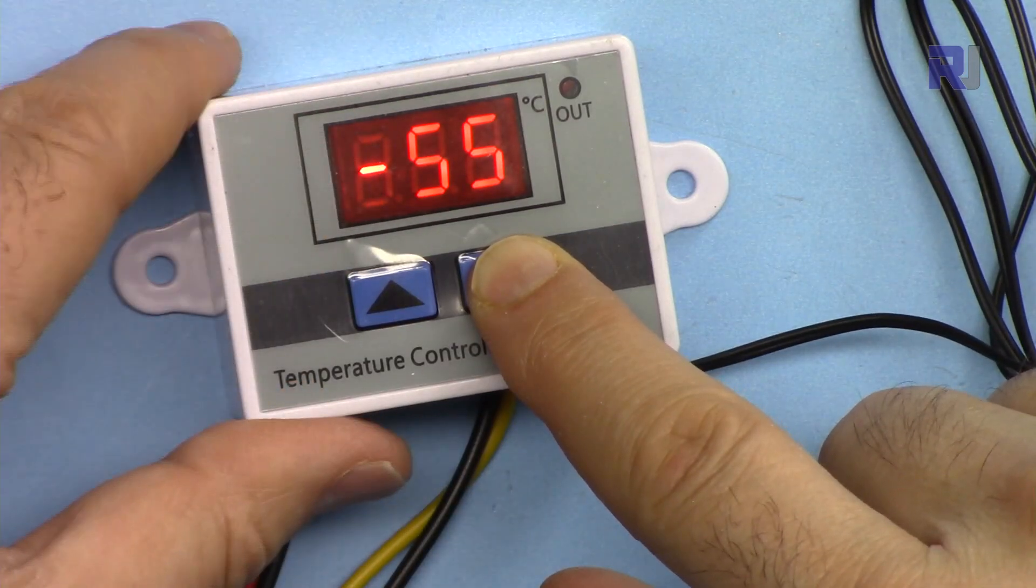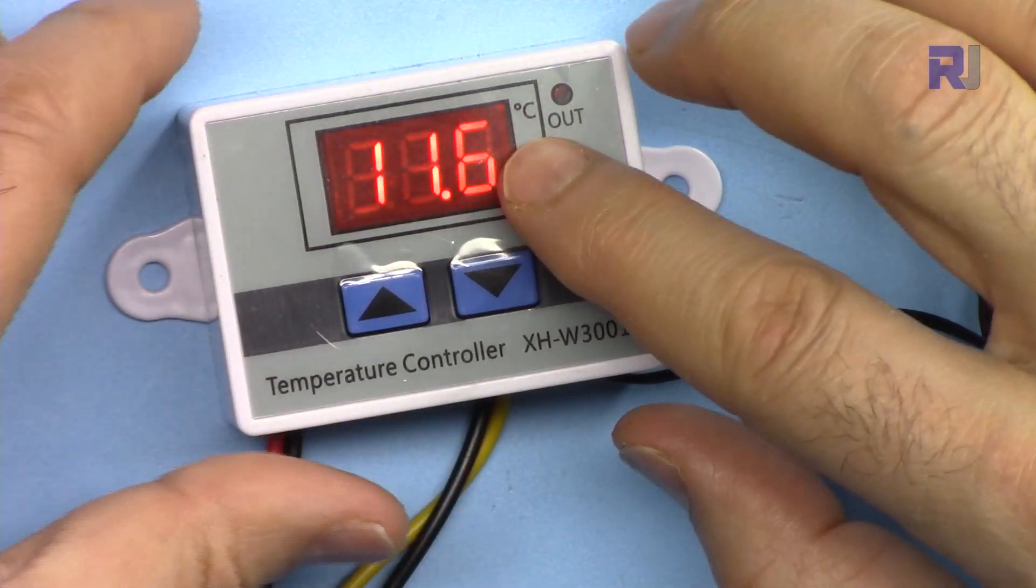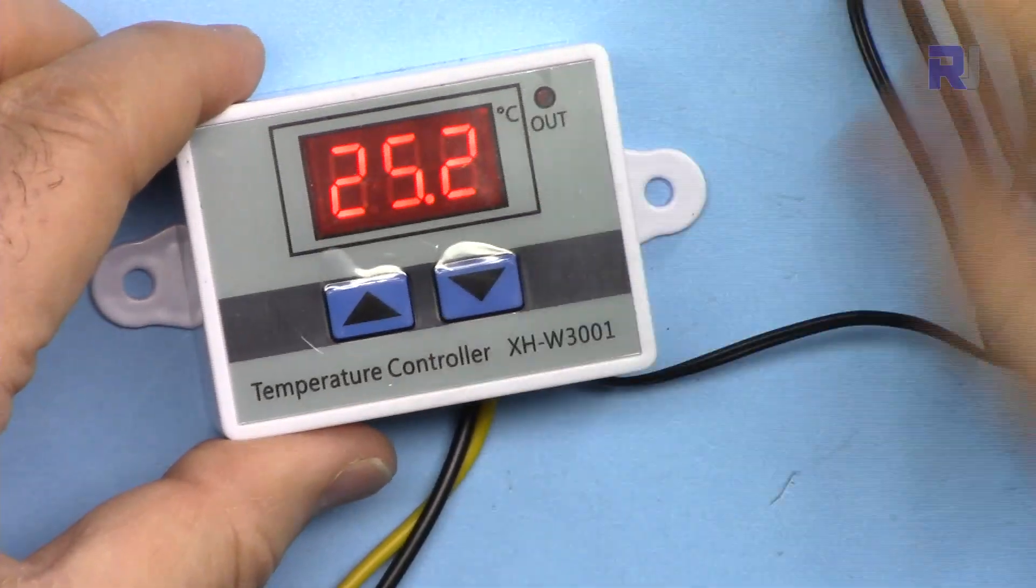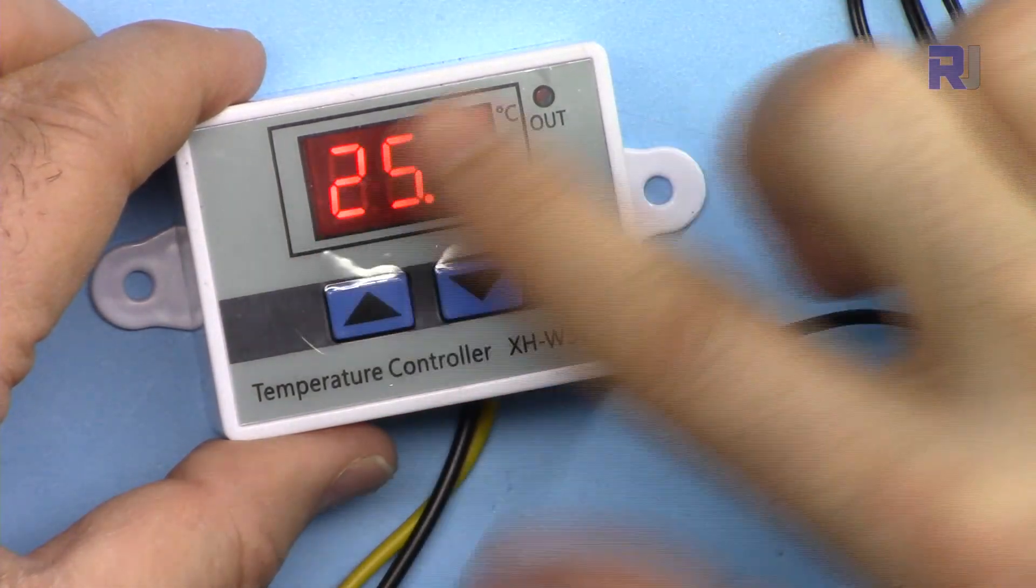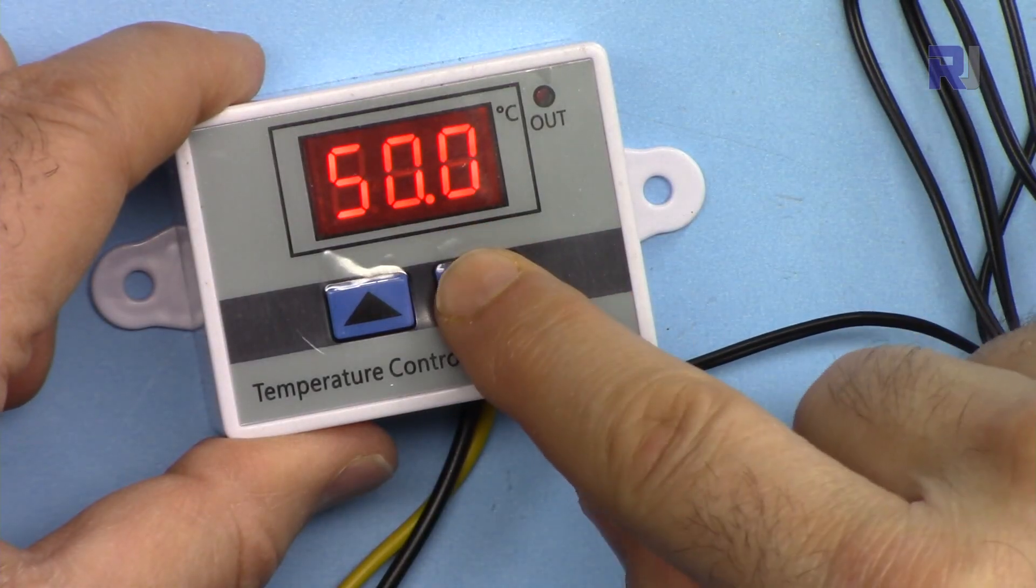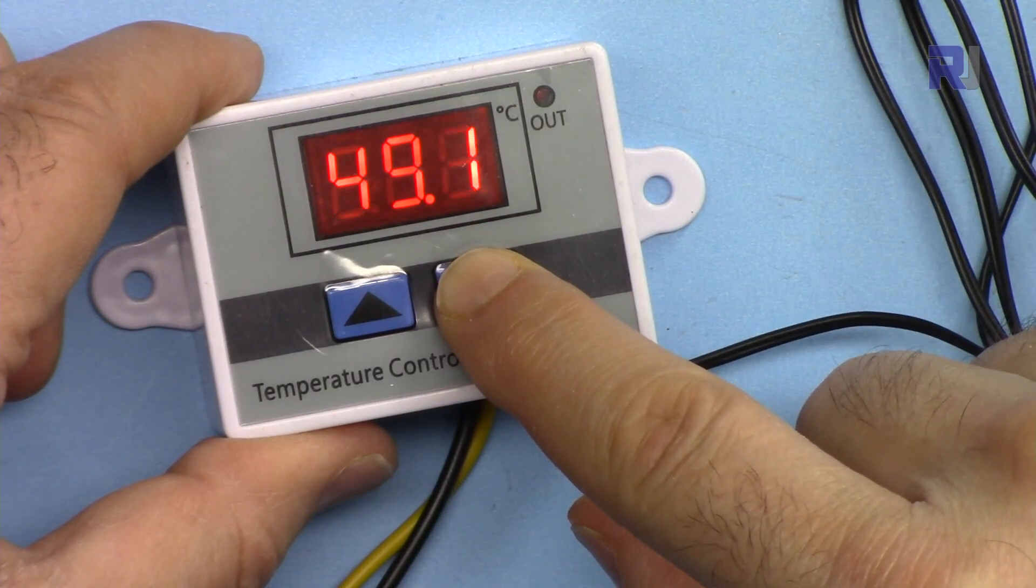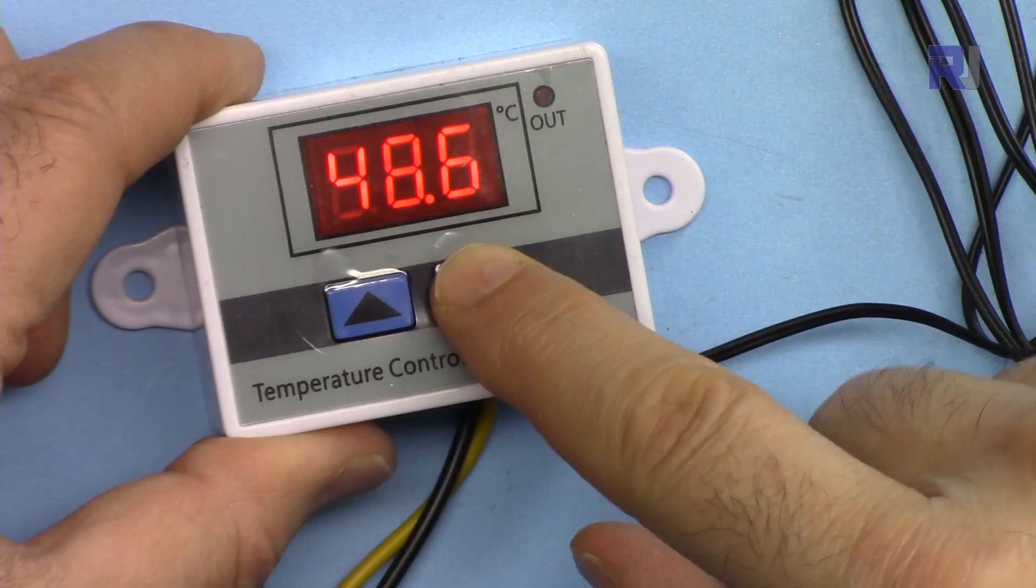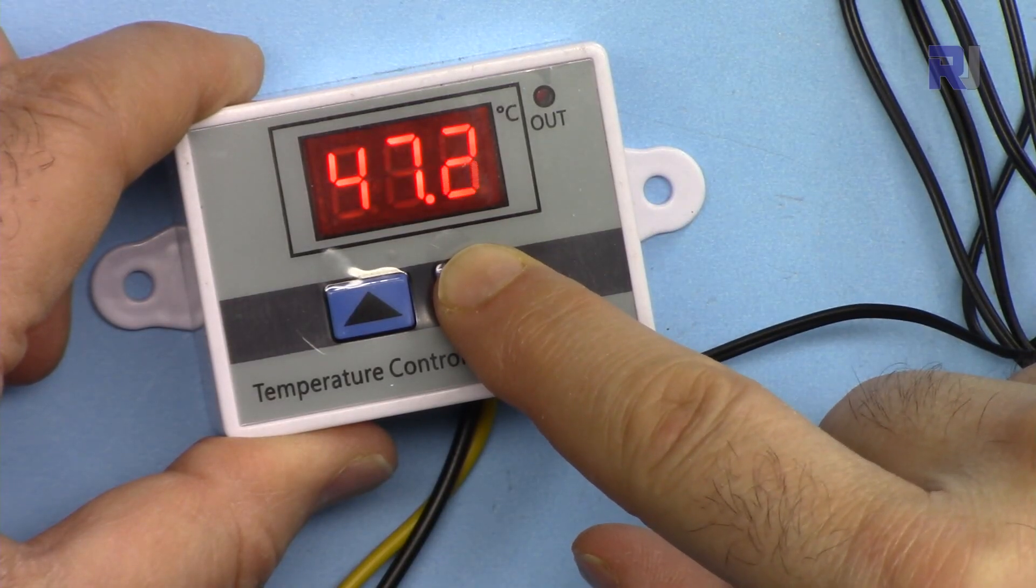So minus 55, that's the minimum. If you wait for a few seconds it returns back to the room temperature. Now that was start. If you want to change the stop, press this - that's stop - and then you can hold this. And that is where the stop temperature can be adjusted.